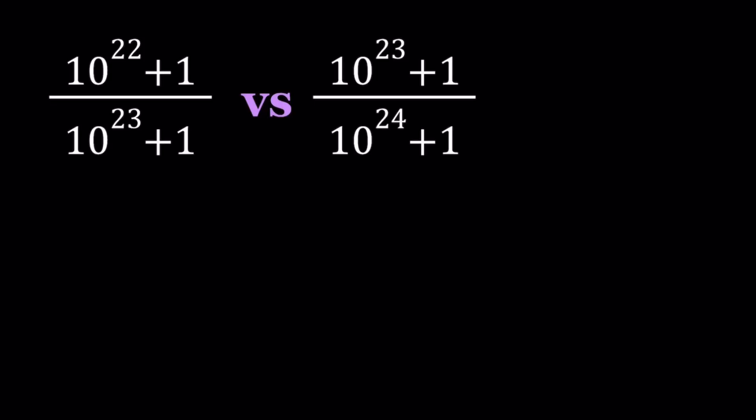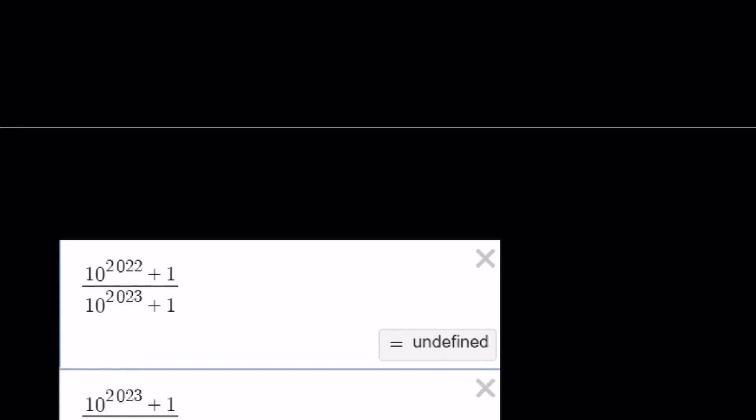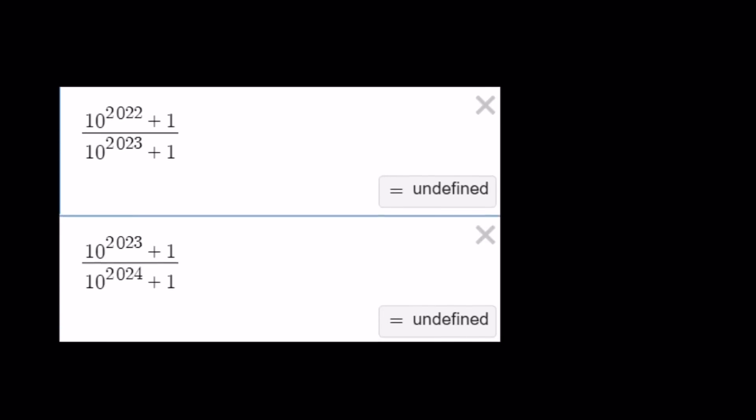Now initially, this problem was designed with different numbers, much larger numbers, such as 2022 and 2023, in honor of the years. But when I plug those in, I got these results. They're both undefined. How can I compare them numerically? There's no way you can evaluate them.